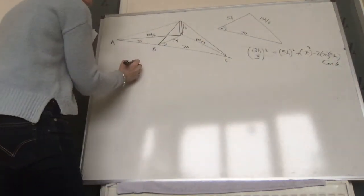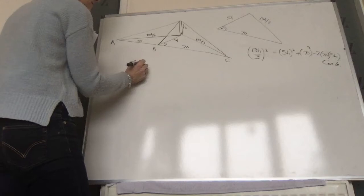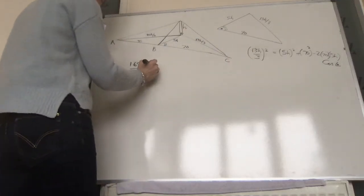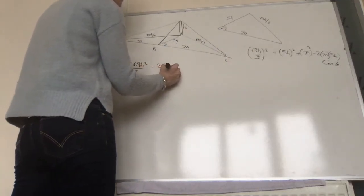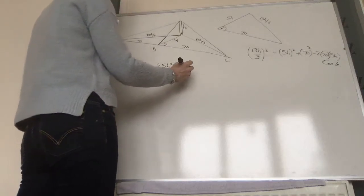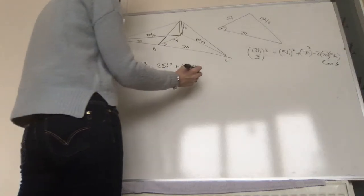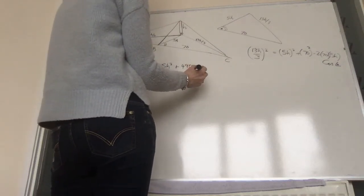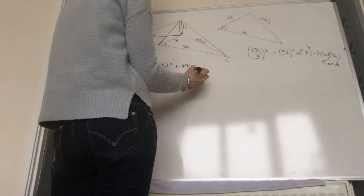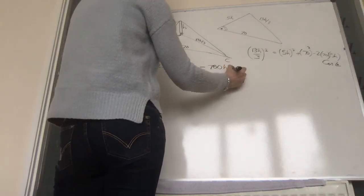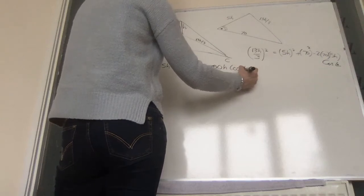Very quickly, 13h, that's 169 h squared over 9, top by top, bottom by bottom, equals 25h squared plus 4900 minus 2 by 70, 2 by 350 is 700h cosine the angle.